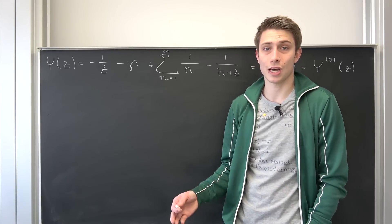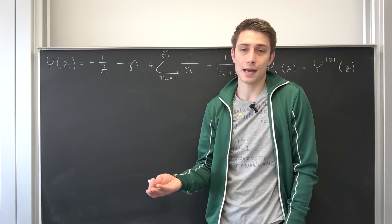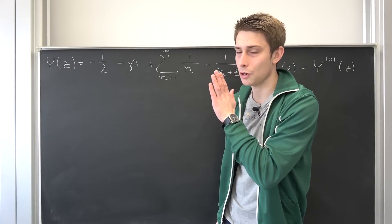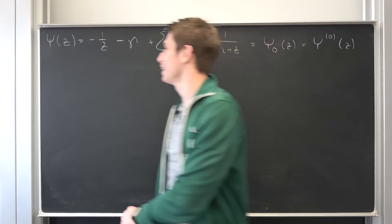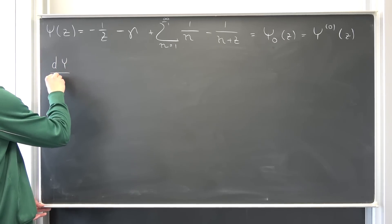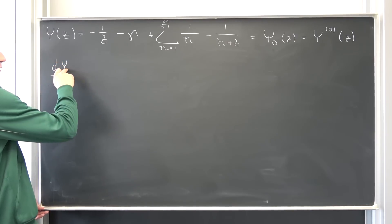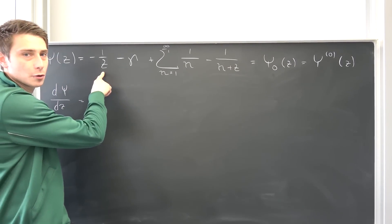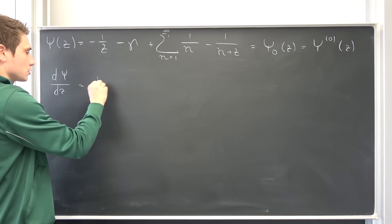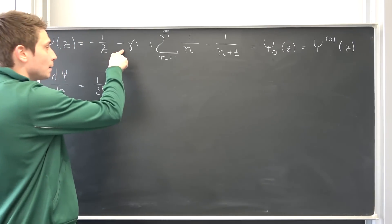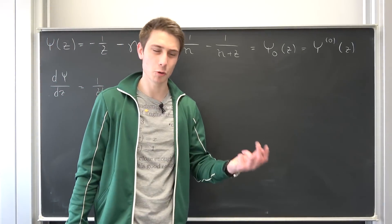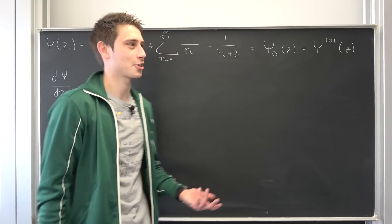Let's start off with the first derivative and see if we can identify a certain pattern in the differentiation — there is one. So differentiating our digamma function with respect to z: this is an ugly-looking expression. Differentiating 1/z leaves us with -1/z². Negative and negative cancel out to give just 1/z². The Euler-Mascheroni constant is going to die in the process, which is good.